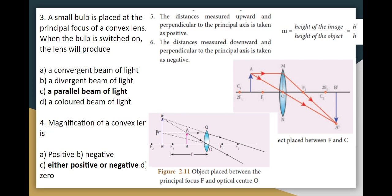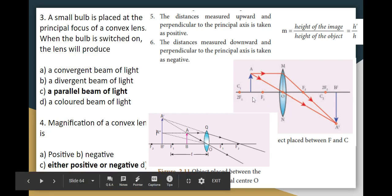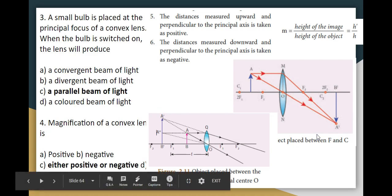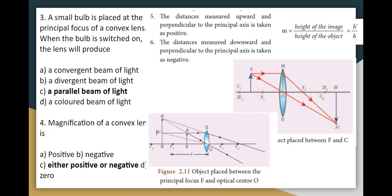How do you find the magnification of a convex lens? Magnification is the height of the image divided by the height of the object. The principal axis is perpendicular — upward is positive and downward is negative. The image formed by a convex lens is either downward or upward depending on the position. So magnification can be either positive or negative, and the answer is Option C.